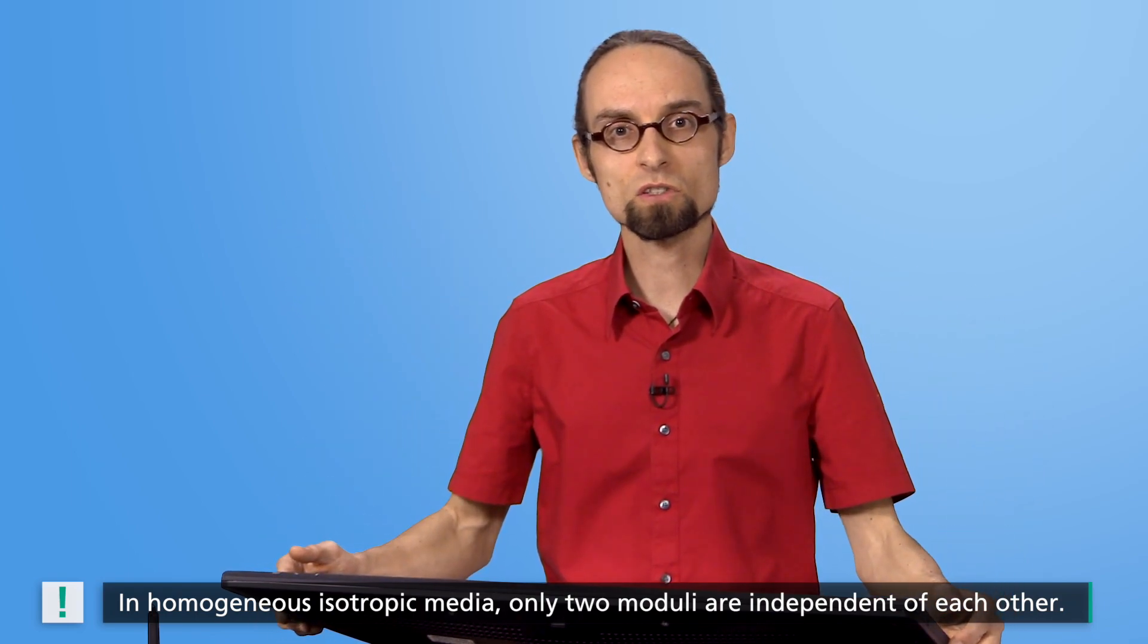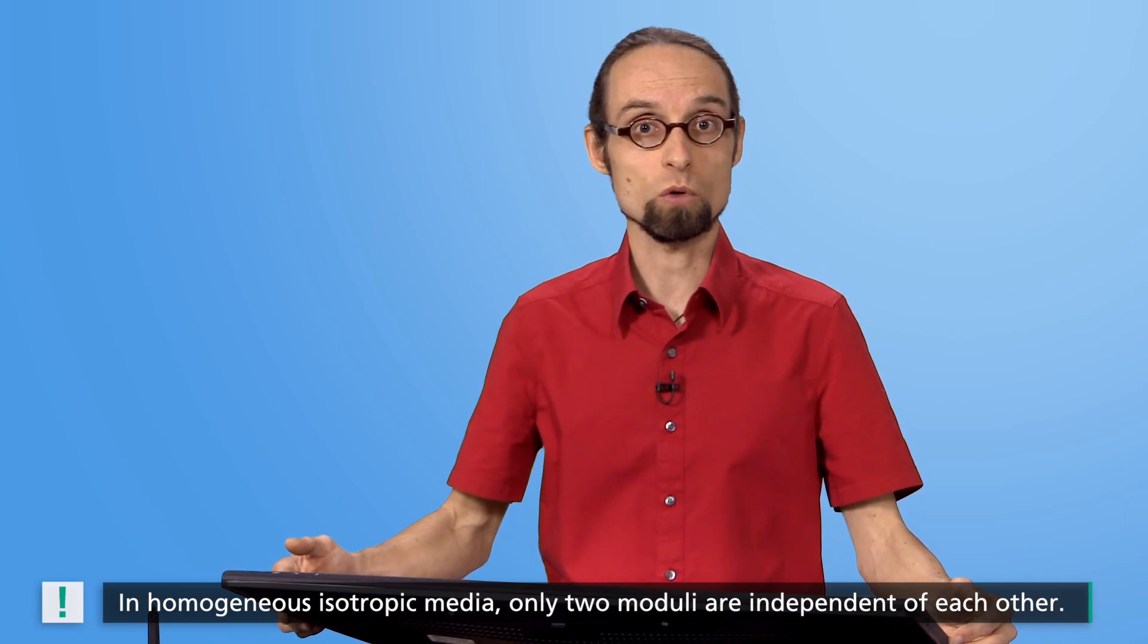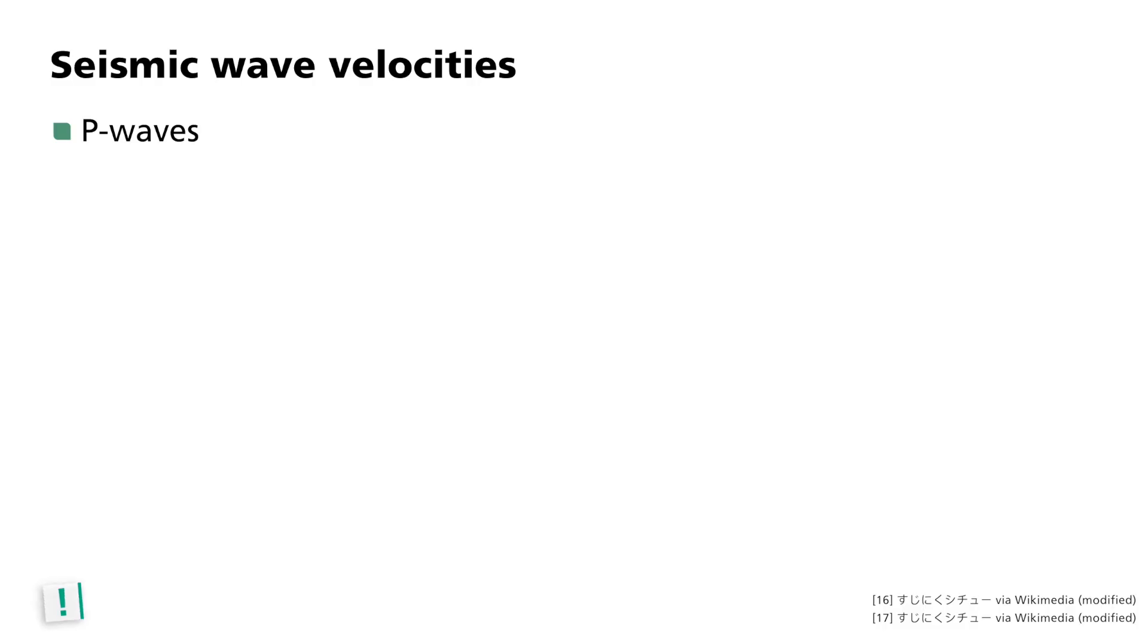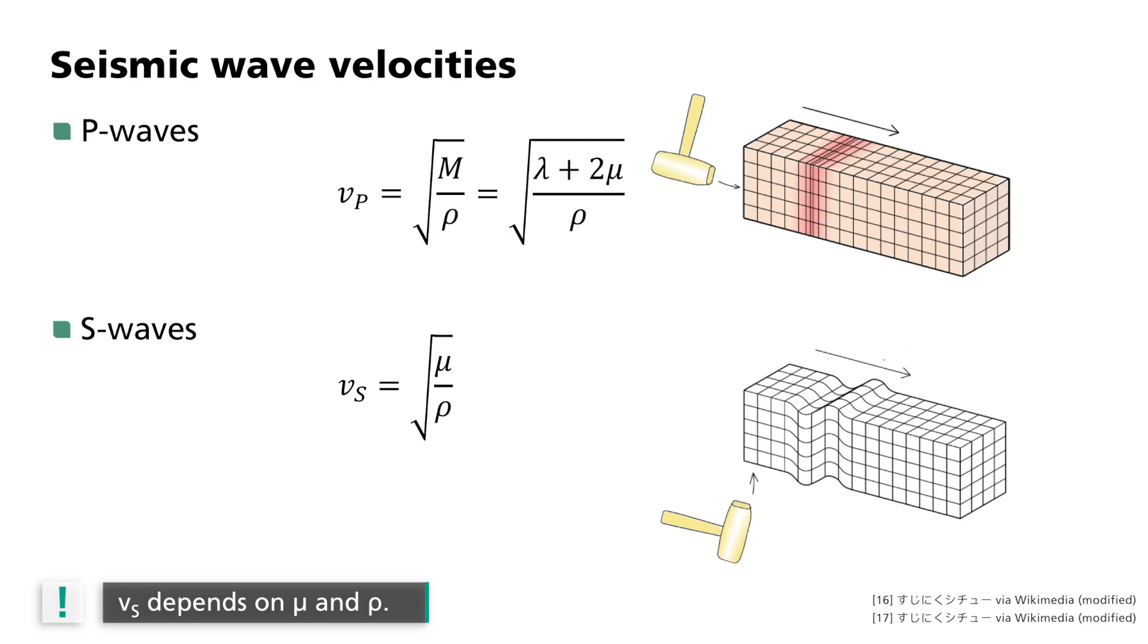For the propagation velocity of the seismic body wave types p and s, the longitudinal modulus m and the shear modulus mu are crucial. The p-wave velocity vp equals the root of m divided by the density rho, or the root of lambda plus 2 mu divided by rho. The s-wave velocity vs is equal to the root of mu divided by rho. Hence, in addition to an elastic modulus, both also depend on the density of the propagation medium. With these velocities, the seismic p and s-waves travel across the earth.